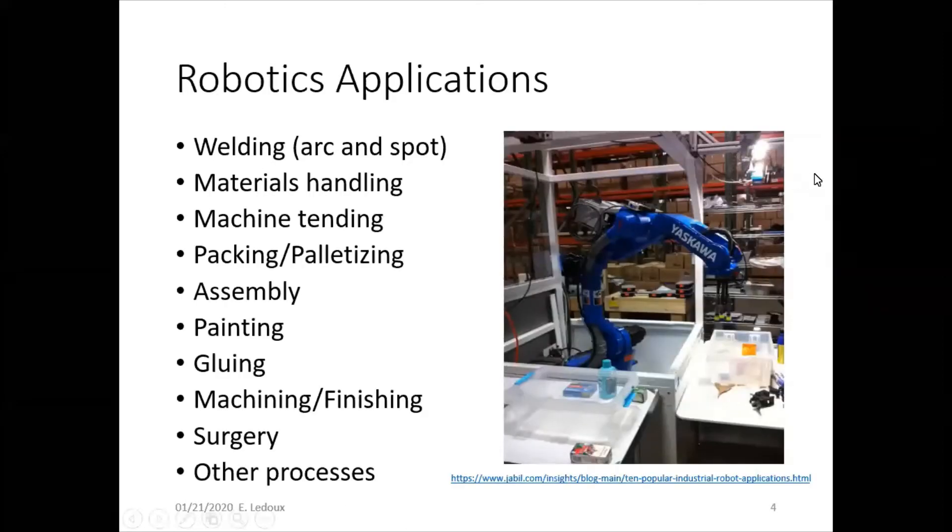Robots are used in tons of applications: welding, like arc welding or spot welding, materials handling, machine tending, packing, palletizing, pretty much anything where you need something moved from one spot to another spot. To view a video of robots doing lots of these types of applications, go to the link.